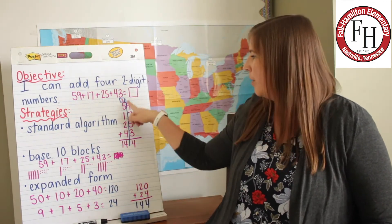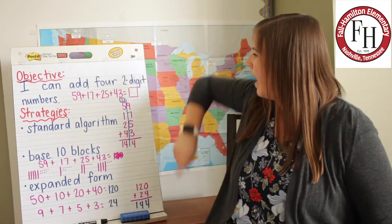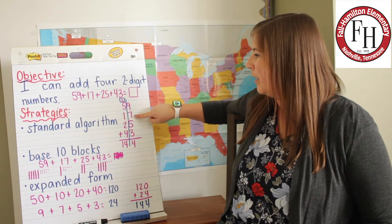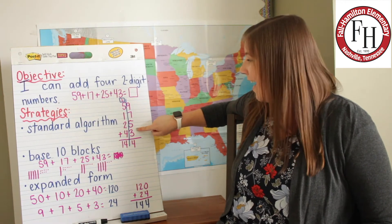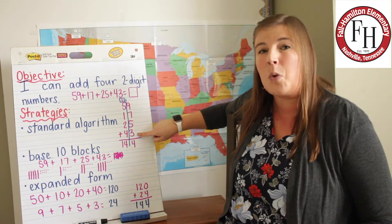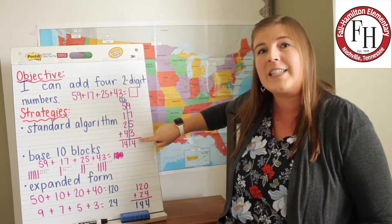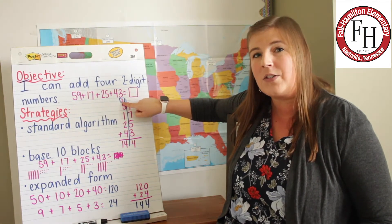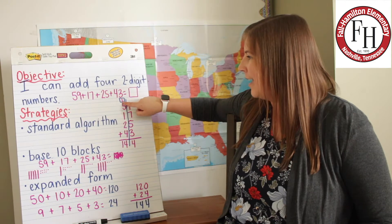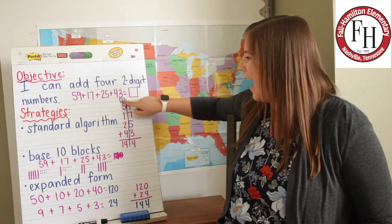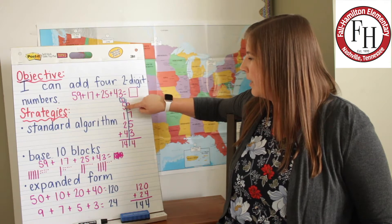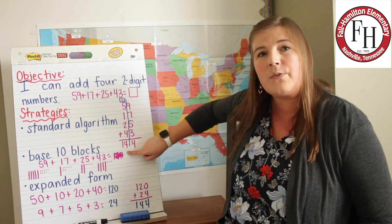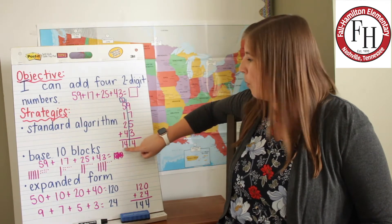When you use the standard algorithm, you line up your numbers vertically and start in the ones place. So I'm going to add nine plus seven plus five plus three. That equals 24. The number 24 has four in the ones place and two in the tens place, so I need to put this two up in the tens place. Now the second step is adding all of my tens place: two plus five plus one plus two plus four. That equals 14, so my total is 144.